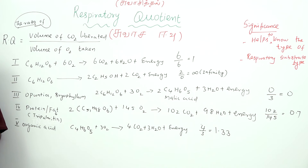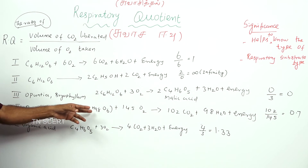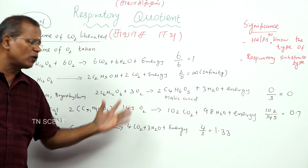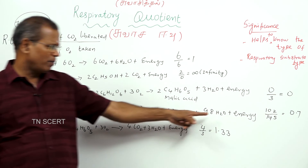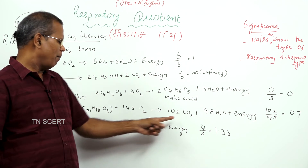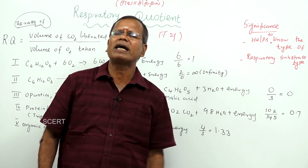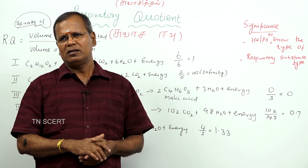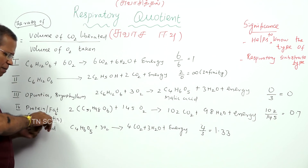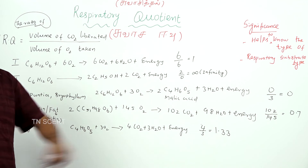When fat is used as a respiratory substrate — for example, tripalmitin — 145 oxygen molecules are taken and 102 carbon dioxide molecules are evolved. So, 102 divided by 145 is equal to 0.7. The respiratory quotient of fat (tripalmitin) is 0.7.